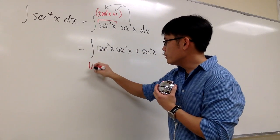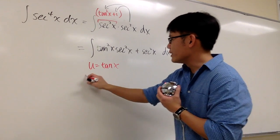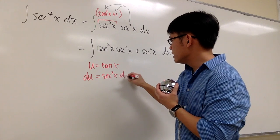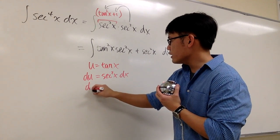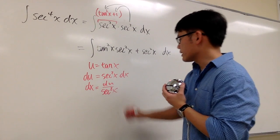So if we let u equal to tangent x, we get du is equal to secant squared x dx, and dx will be du over secant squared x.